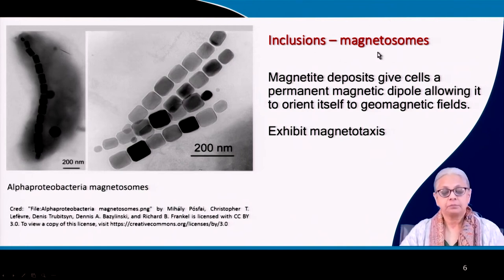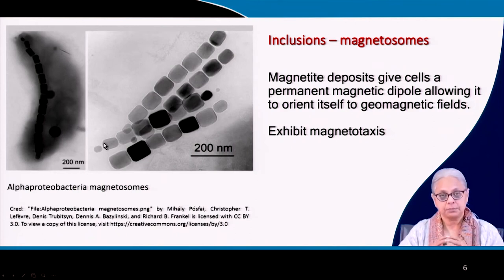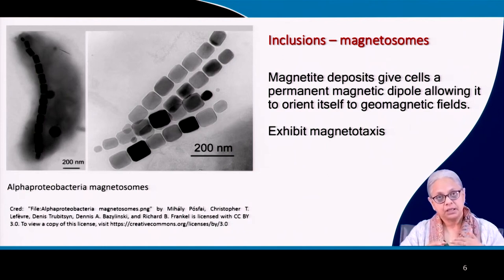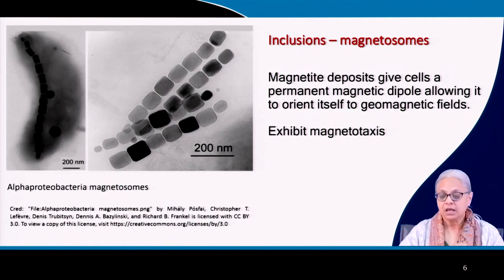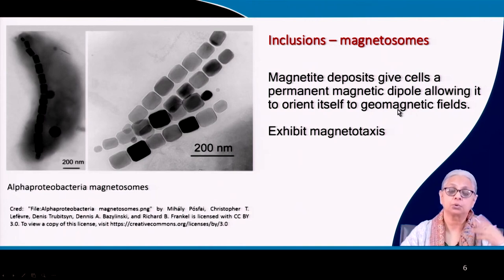These are survival mechanisms that have been developed by bacteria to survive when environmental conditions are hostile. Then we come to other inclusions like magnetosomes. There are certain types of bacteria — an alpha proteobacteria — which have magnetosomes and have created these deposits of magnetite. Magnetite is a ferric mineral and it gives the cells a permanent magnetic dipole. The bacteria can orient itself to the earth's geomagnetic fields, and entire colonies of bacteria orient themselves accordingly. This is considered an example of magnetotaxis — these bacterial colonies will move in particular directions in response to geomagnetic fields. Fossil evidence of these kinds of bacteria have been found.